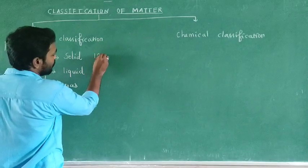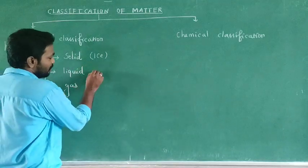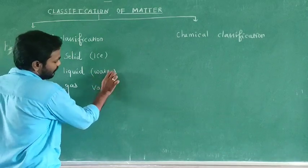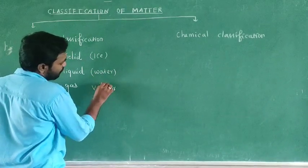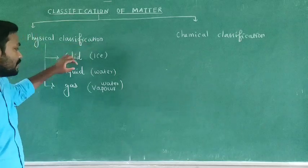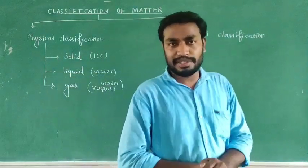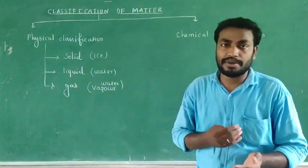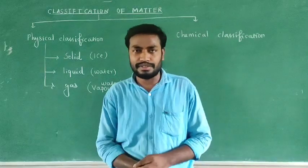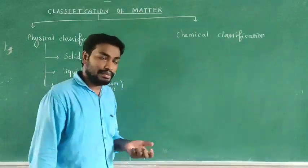Solid example: ice. Liquid example: water. Gas example: water vapor. Also, iron, gold, and silver — in their elemental aluminum material state — are solid. Juice content is liquid. For gas, the atmosphere represents bacteria — nitrogen, oxygen, carbon dioxide — these are gases.